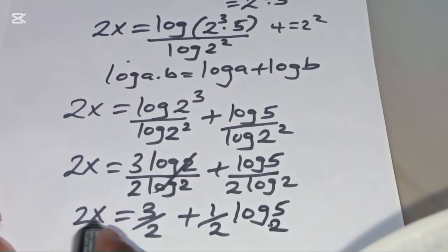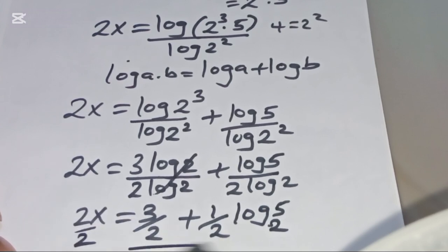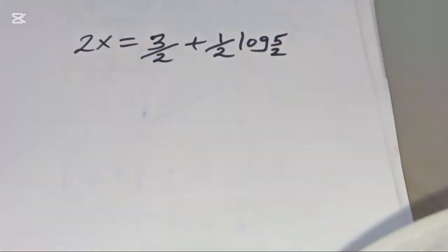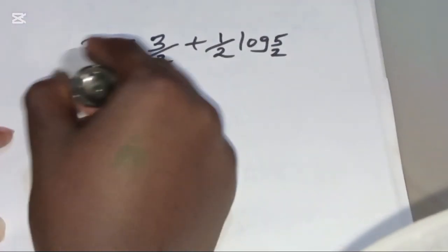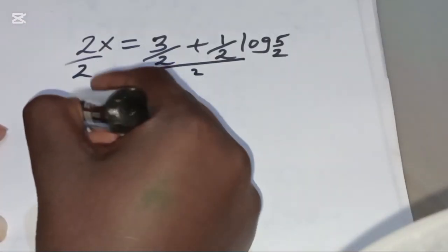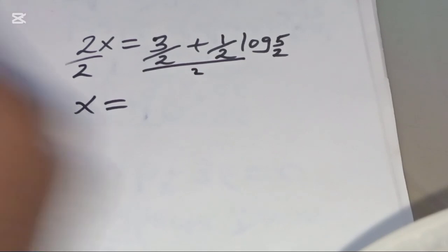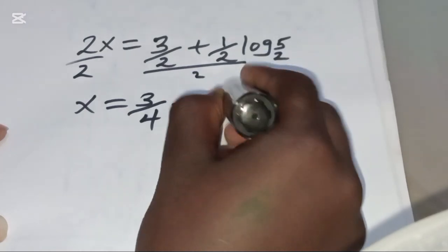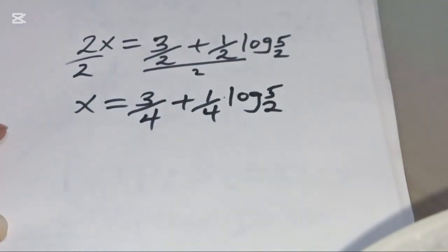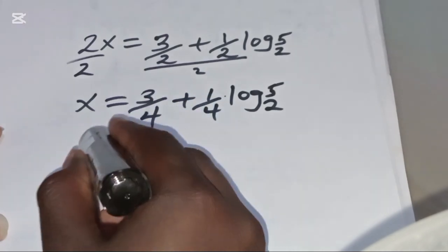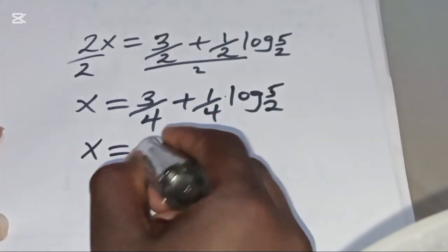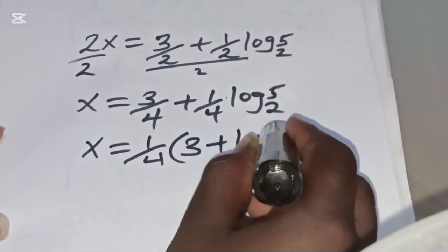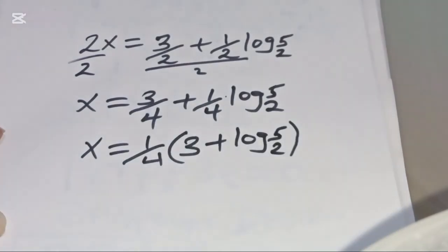Dividing both sides by 2, the value of x is equal to 3/4 + (1/4)·log₂(5). Since 1/4 is common, the value of x is (1/4)(3 + log₂(5)). This is the value of x.